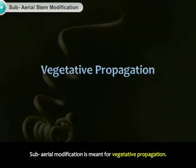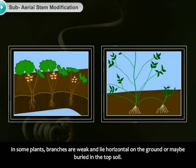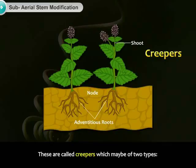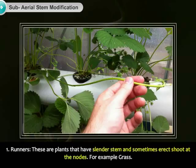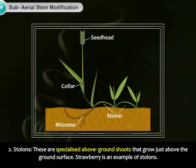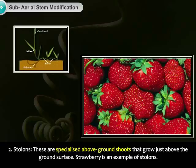Sub-aerial modification is meant for vegetative propagation. In some plants, branches are weak and lie horizontal on the ground or may be buried in the topsoil. Aerial branches and adventitious roots develop at nodes. These are called creepers, which may be of two types. 1. Runners: These are plants that have slender stems and sometimes erect shoots at the nodes. For example, grass. 2. Stolons: These are specialized above-ground shoots that grow just above the ground surface. Strawberry is an example of stolons.